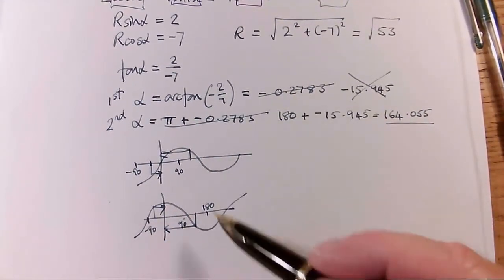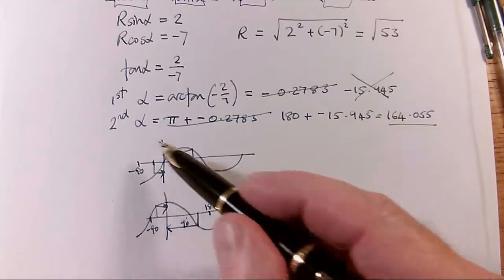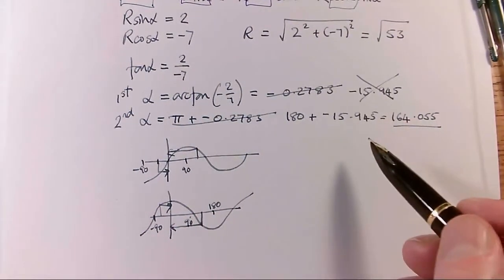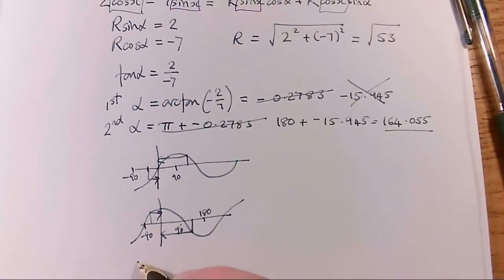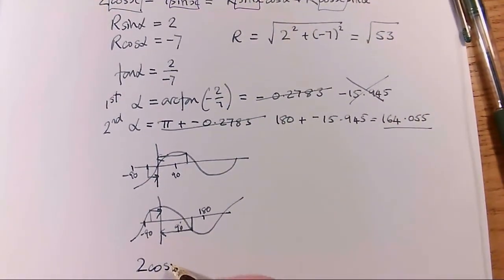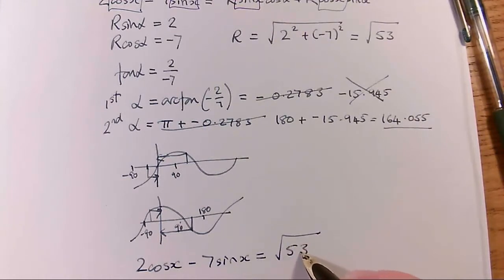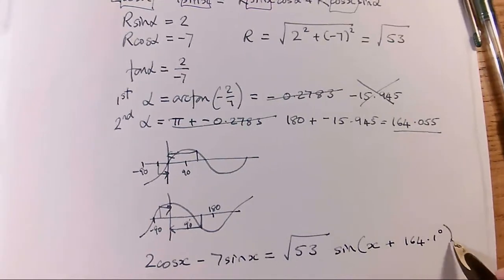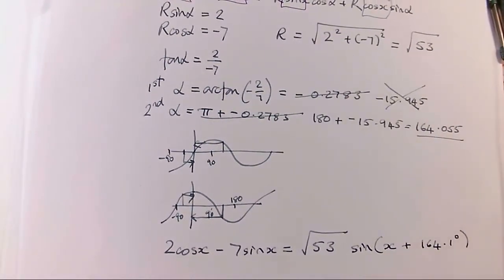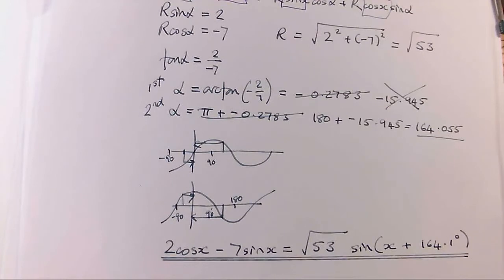So I've made a bit of a mess here. Maybe I could have put these graphs in scribble space, but I think my method is clear. I've got my first alpha, second alpha. I've got R clearly there. I just need to state my answer. So it was 2 cos x minus 7 sine x that I had to deal with. And I now know that that equals root 53 times sine of x plus alpha. But my alpha is 164.1 degrees to one decimal place. That's what we're normally doing degrees. And as soon as I've double underlined it, I will have finished my solution.